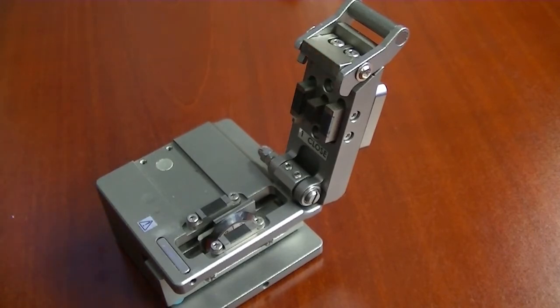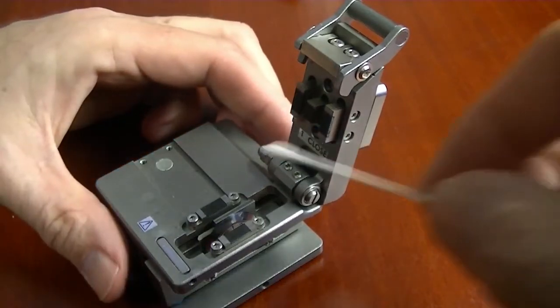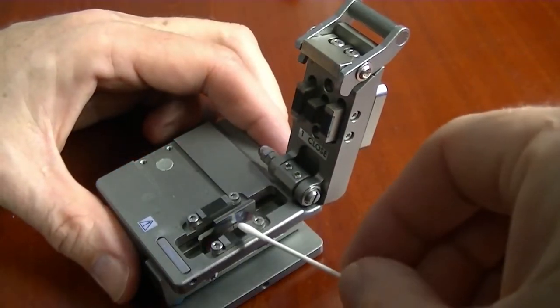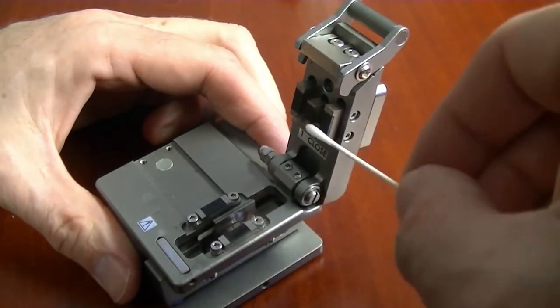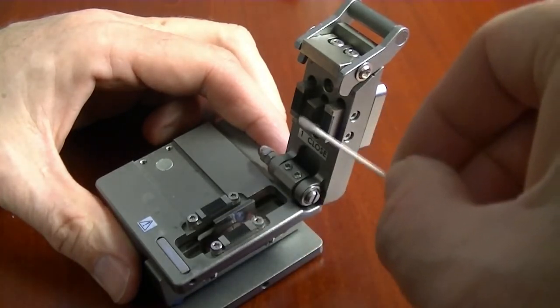Use a lint-free swab with 99% pure isopropyl alcohol to clean all presser pad surfaces, making sure to remove any fiber shards.